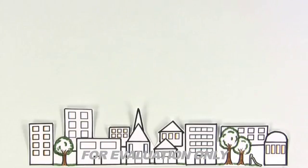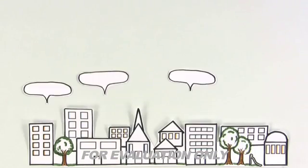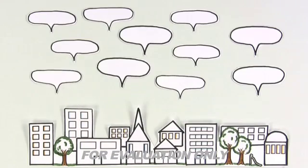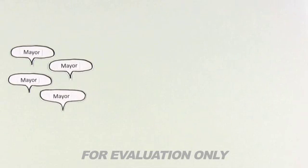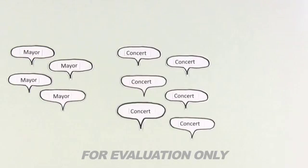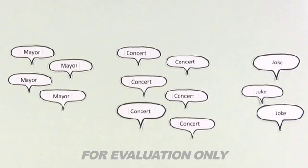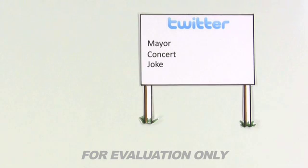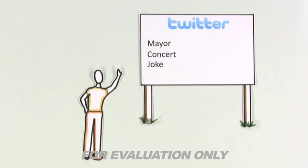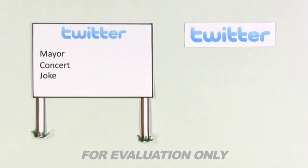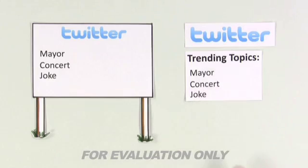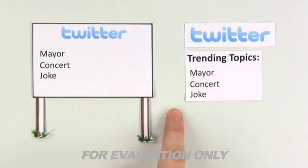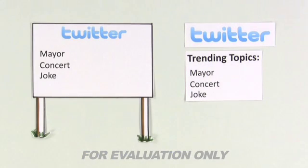Every minute of every day on Twitter, people are using some words more than others. Maybe the town has a new mayor, a concert came to town, or the same joke is being told over and over. If the most popular words could appear on a sign, a person just arriving in town could get a feel for what was interesting to the residents at the moment. On Twitter, the most used words are known as trends, and they're a great way to see what's interesting on Twitter.